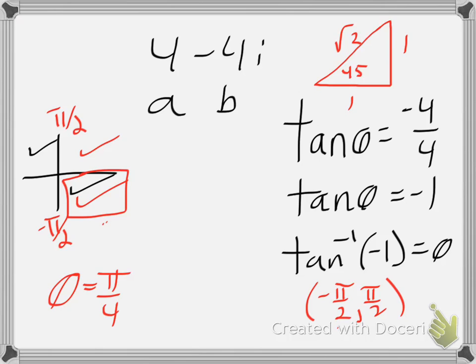So that means the theta that I'm looking at is pi over 4. In quadrant 4, that translates to 7 pi over 4. And now I have my value for theta.